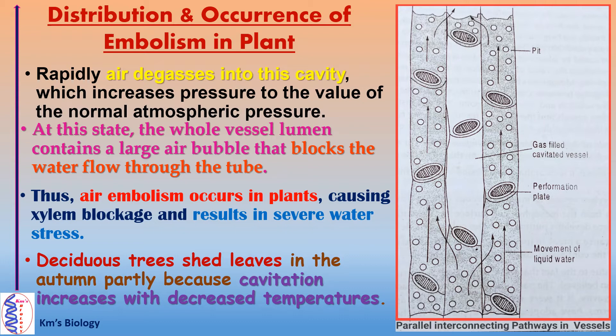Rapidly, air degases into this cavity, which increases pressure to the value of normal atmospheric pressure. At this state, the whole vessel lumen contains a large air bubble that blocks the water flow through the tube. Thus, air embolism occurs in plants causing xylem blockage and results in severe water stress. Deciduous trees shed leaves in autumn partly because cavitation increases with decreased temperatures. Here is a diagram that shows movement of liquid water by parallel interconnecting pathways in vessels.